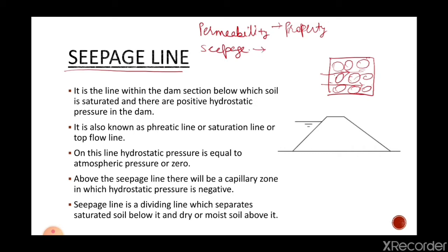Now, seepage. If water is flowing through the soil sample, then this process is known as seepage. If this soil permits the flow of water through it, then this property of soil will be known as permeability, and if water is flowing through the voids of the soil, then this process will be known as seepage.